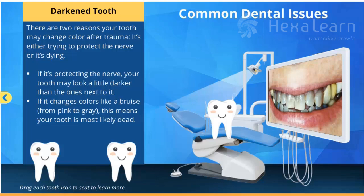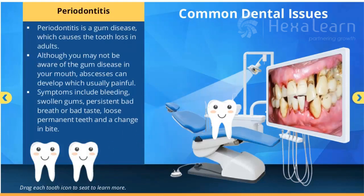Darkened tooth: there are two reasons your tooth may change color. After trauma, it's either trying to protect the nerve or it's dying. If it's protecting the nerve, your tooth may look a little darker than the ones next to it. If it changes color like a bruise from pink to gray, your tooth is most likely dead. Periodontitis is a gum disease which causes tooth loss in adults. Abscesses can develop, which are usually painful. Symptoms include bleeding, swollen gums, persistent bad breath or bad taste, loose permanent teeth, and a change in bite.